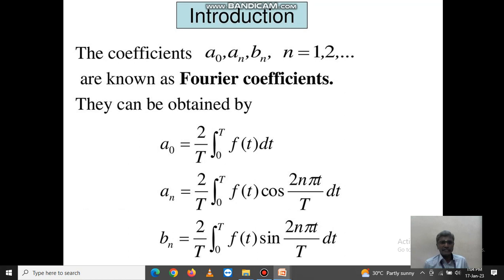Next one, the coefficients a₀, aₙ, bₙ, where n = 1, 2, ... are known as Fourier coefficients. They can be obtained by: a₀ = (2/T)∫₀ᵀ f(t)dt, aₙ = (2/T)∫₀ᵀ f(t)cos(2nπt/T)dt, and bₙ = (2/T)∫₀ᵀ f(t)sin(2nπt/T)dt.